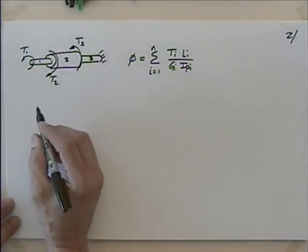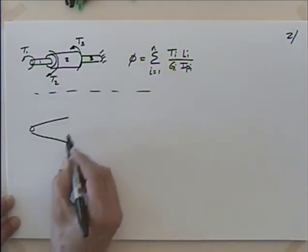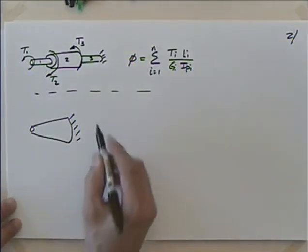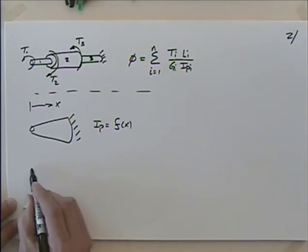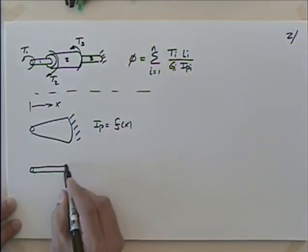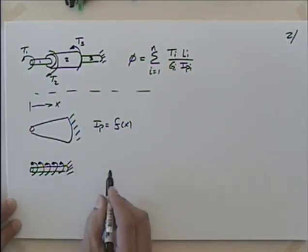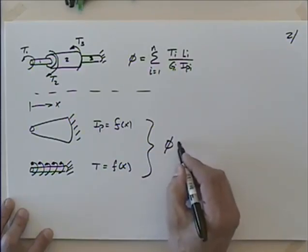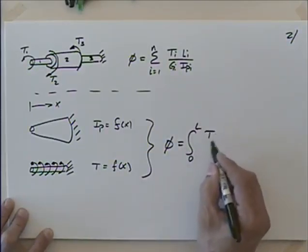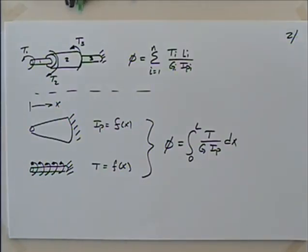Other cases to consider: if the shaft is tapered, the polar moment of inertia is some function of x. Or if we have a distributed torque — like some sort of an auger — where T is some function of x, then phi equals the integral from 0 to L of the torque divided by G times I sub P dx. Whatever is constant you pull out of the integral; none of them may be constant.